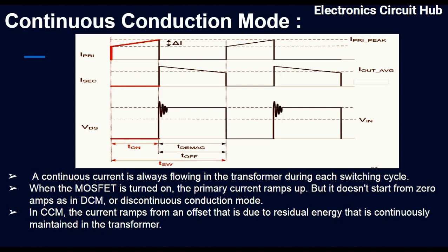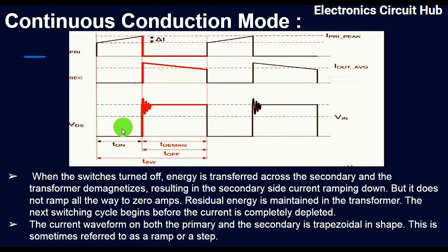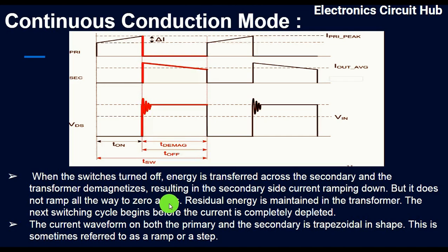Whether the MOSFET is on or off, the transformer maintains that residual energy. This is how the flyback converter works when the MOSFET is turned on in continuous conduction mode. When the MOSFET is turned off, the energy is transferred to the secondary and the transformer demagnetizes, resulting in the secondary side current ramping down, but it doesn't ramp all the way to zero amps because residual energy is maintained in the transformer.